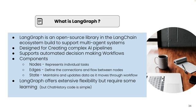First we'll see a quick introduction about LangGraph. LangGraph is an open source library in the LangChain ecosystem built to support multi-agent systems. It is designed for creating complex AI pipelines and supports automated decision-making workflows. The major components are: nodes, which represent individual tasks; edges, which define the connections and flow between nodes; and state, which maintains and updates data as it moves through the workflow.